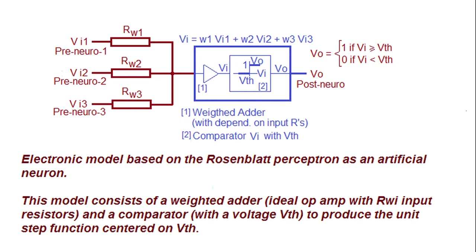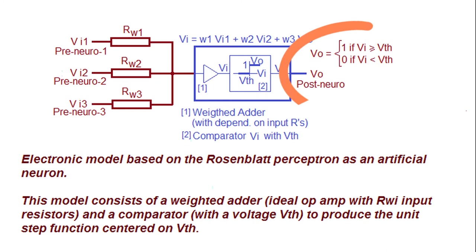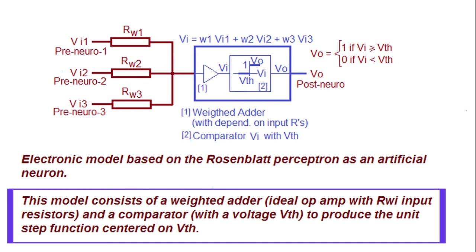Electronic model of an artificial neuron based on the Rosenblatt perceptron. On the left there are inputs, similar to dendrites, pre-neuron. To the right is an output, similar to the axon terminal, post-neuron. The functionality consists of a weighted adder based on an op-amp with input resistors as weights of the adder, and a comparator based on an op-amp with a reference voltage to produce the step unit function.